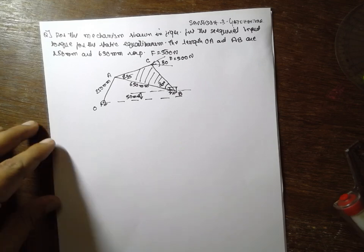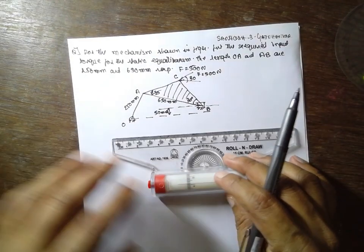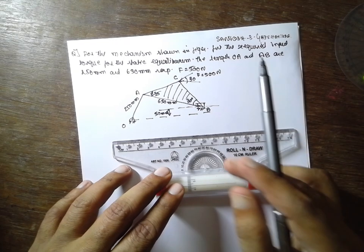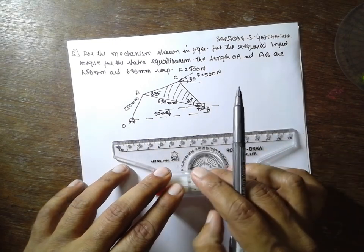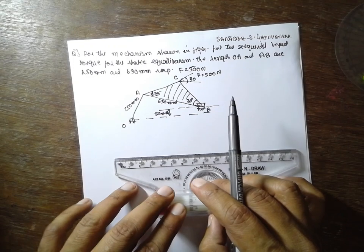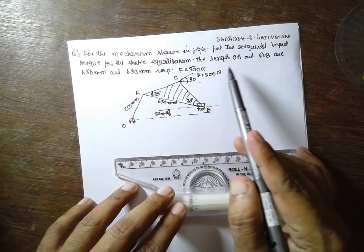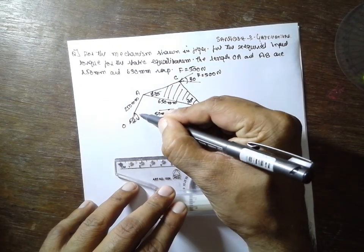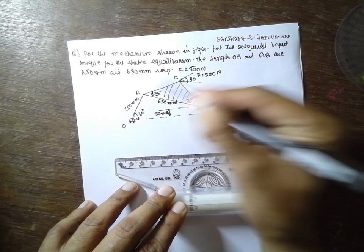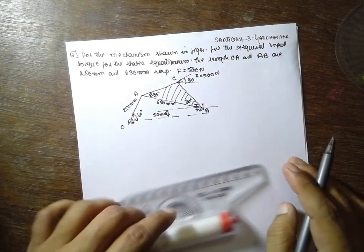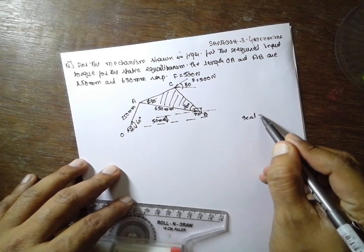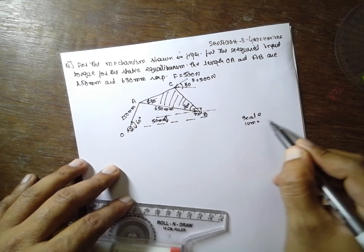I am Satyushka Adelukar. Today I am teaching you Dynamic Equilibrium. In Dynamic Equilibrium, I am focusing on static equilibrium problems. This is the problem. The angle OA is 60 degrees. I will consider the scale: 1 cm equals 100 mm.